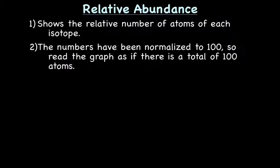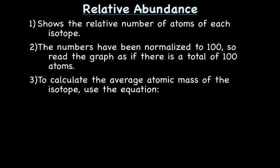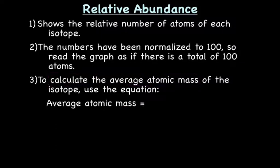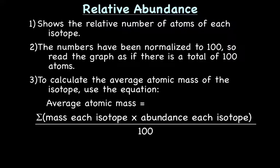To calculate what we really want from these graphs — the average atomic mass — you look at the graph and then use the equation: average atomic mass equals the sum of the mass of each isotope times the abundance of each isotope, divided by 100. That will give us the average atomic mass of the element.